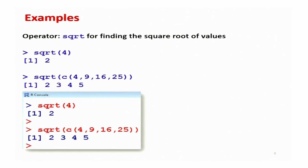Similarly, to find the square root of any number, use sqrt and give the number in parenthesis. For example, sqrt(4) gives 2. Using a data vector, sqrt of c(4, 9, 16, 25) operates element-wise and returns 2, 3, 4, and 5 — the square roots of each value.